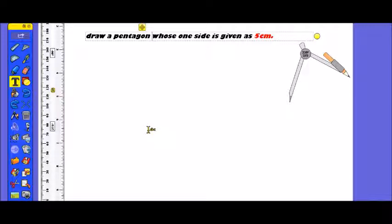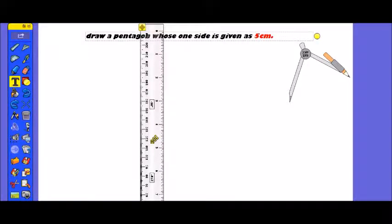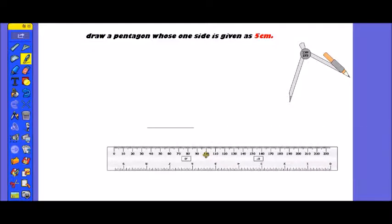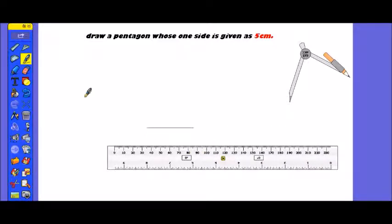Let's start first, let's see a question. How many sides are given? One side of the pentagon is given to you. So first, let's draw a line — a 5cm line.